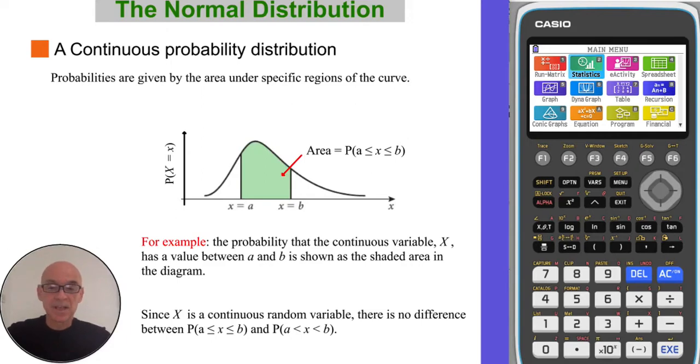Since x is a continuous random variable, there is no difference between these two statements. If you think about what the first value less than two is, that will be 1.9999999 infinitely.